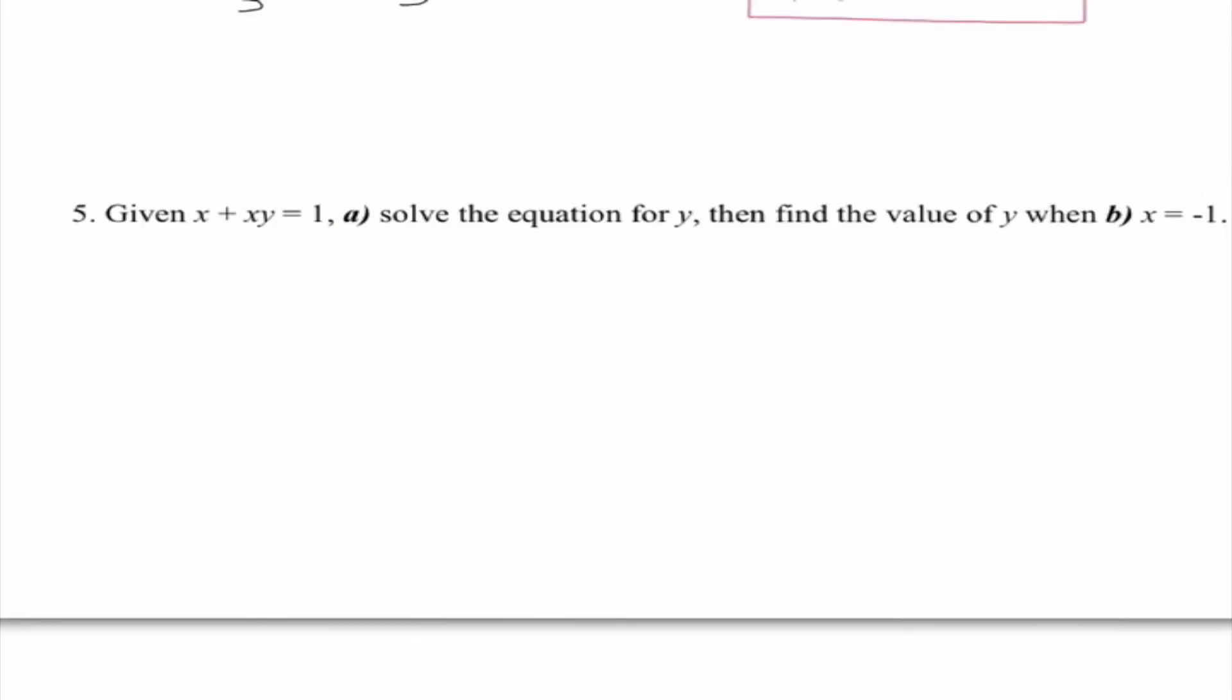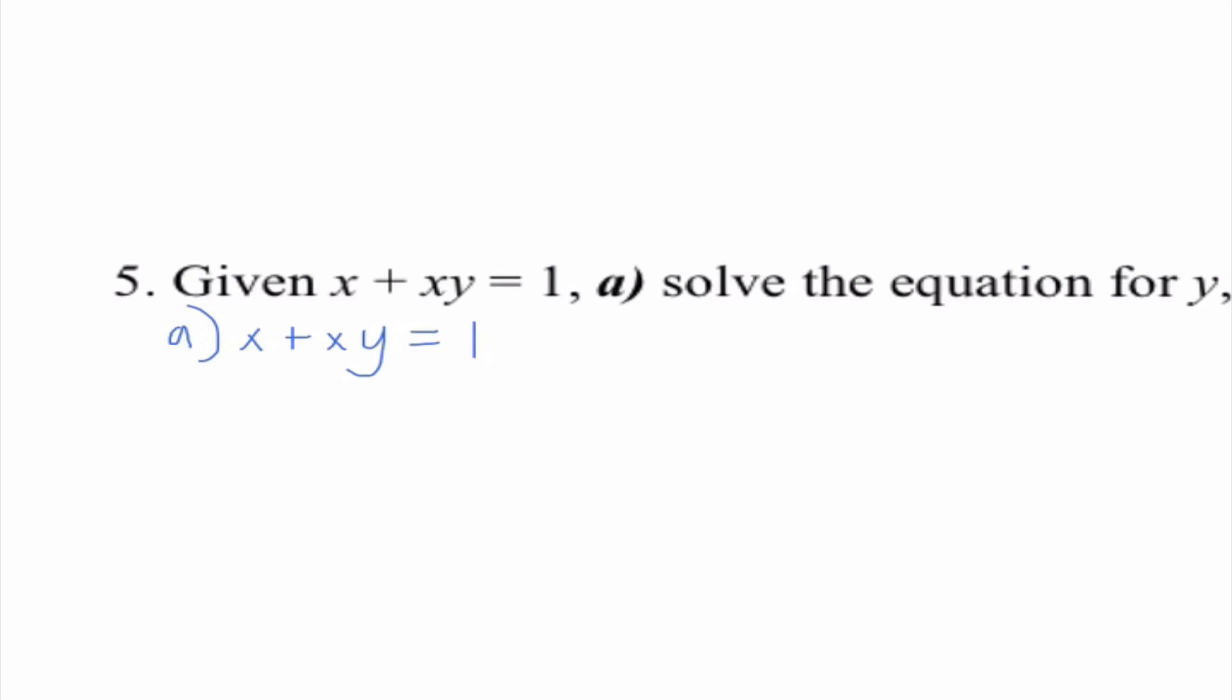Our final example of the day number 5 says, given X plus XY equals 1, A, solve the equation for Y, then B, find the value of Y when X equals negative 1. So it looks like they're telling us to isolate for Y and then go ahead and substitute in. So I'm going to go ahead and rewrite this and try and figure out what exactly we would need to do to get Y by itself.